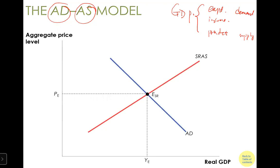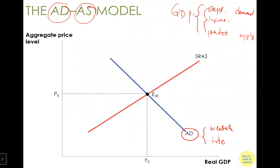Everything we produce is going to return as income to the household, and that income is going to be spent on what we produce. When we look at demand, we look at aggregate demand. The downward-sloping aggregate demand curve says price increases, aggregate expenditure will decline — coming from the wealth effect and interest rate effect.